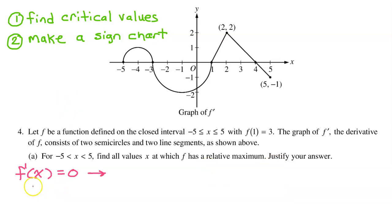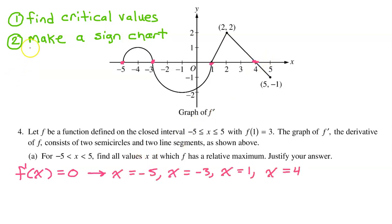So, where is f prime equal to 0? Remember, we are looking at the graph of f prime, so we simply need to see where the graph touches the x-axis. So we have these four critical values. Now it's time to make the sign chart.